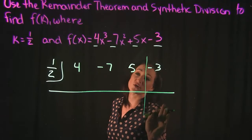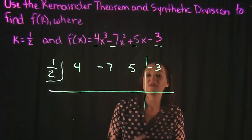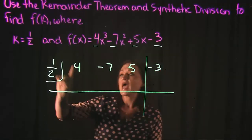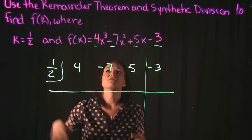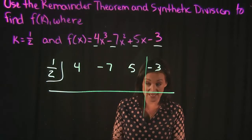in this last spot over here that's actually going to be the value of our function at the point 1 half. That's what the remainder theorem tells us.